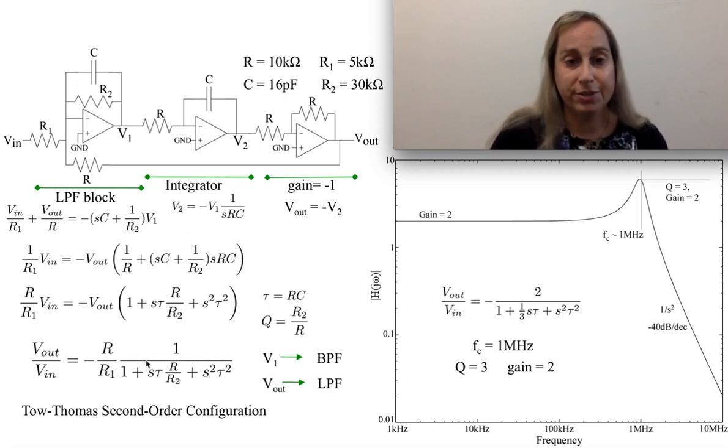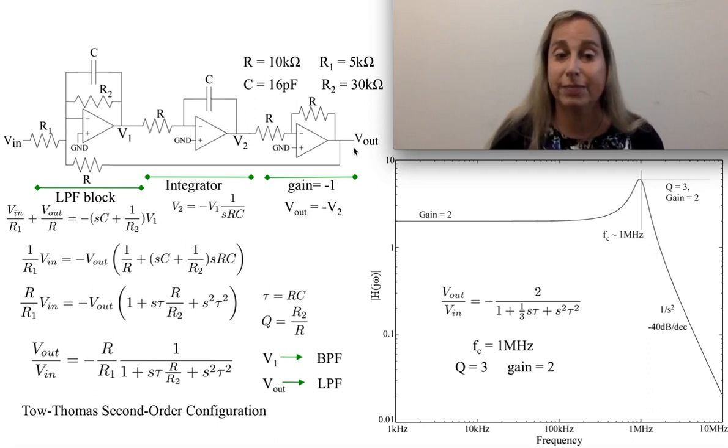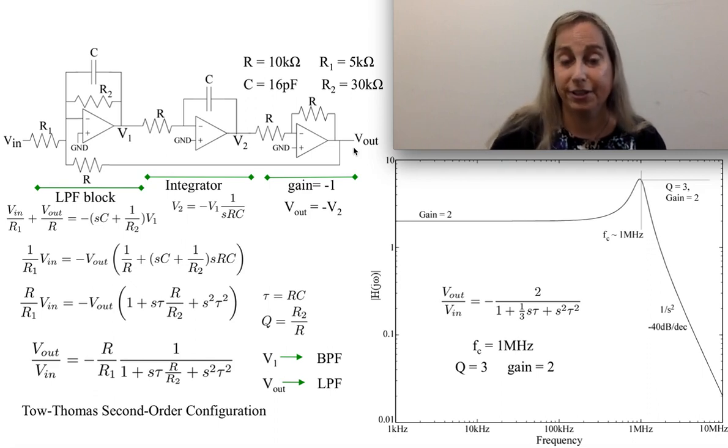Now, what's also interesting is that vout is a low-pass filter response. If I were to look at the response at v1, I actually get a bandpass filter response. Because if you think about it, I would need a bandpass response. I need an S in the numerator to then deal with the additional integration, which gets rid of an S to get to the output. So I would expect that I'm going to get a bandpass filter configuration.